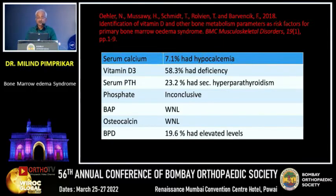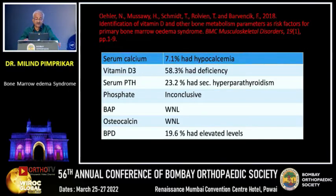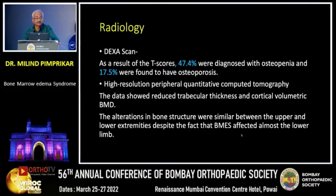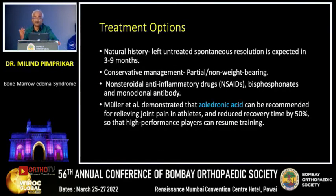A study reported the percentage of abnormalities in biochemical markers: 7.1% had hypocalcemia, and vitamin D3 was starkly deficient in 58.3% of patients. BAP and osteocalcin were within normal limits, meaning there was no problem with bone formation — the problem was with excessive resorption. On radiology with DEXA scan, only 17.5% had osteoporosis, and the alterations were similar in upper and lower extremities, although the lower extremities were affected more.